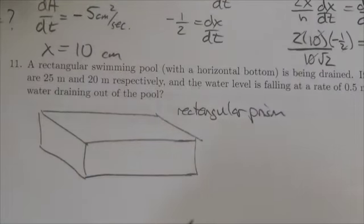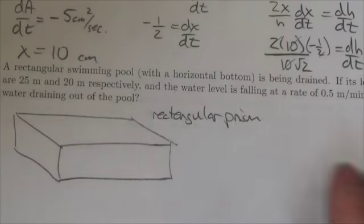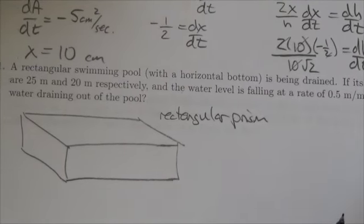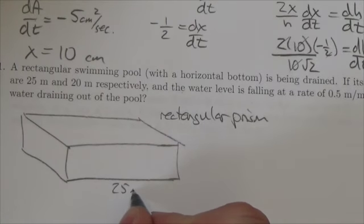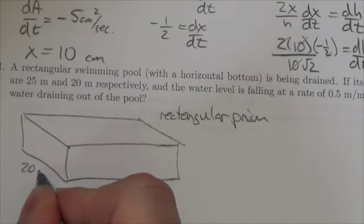It's being drained. Its length and width are 25 meters and 20 meters respectively. So the length is to be 25 meters, the width is 20 meters.